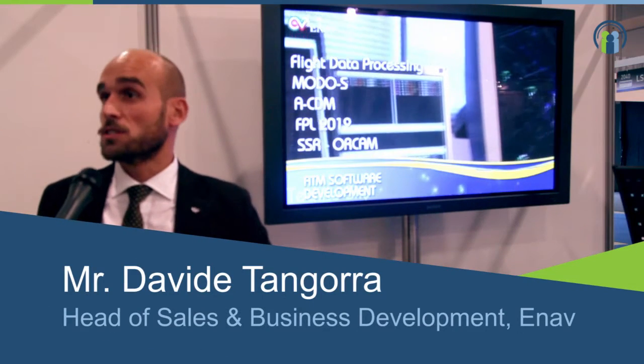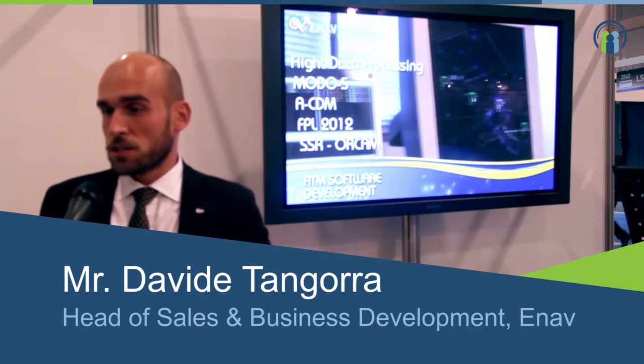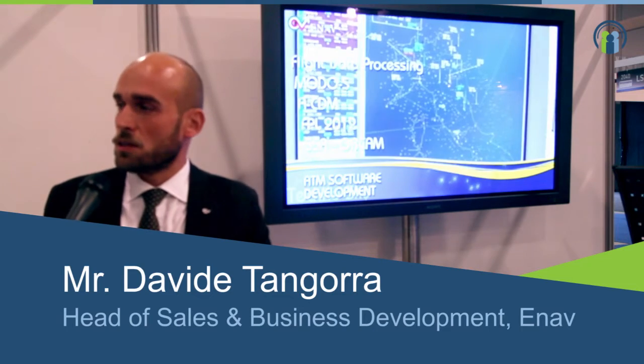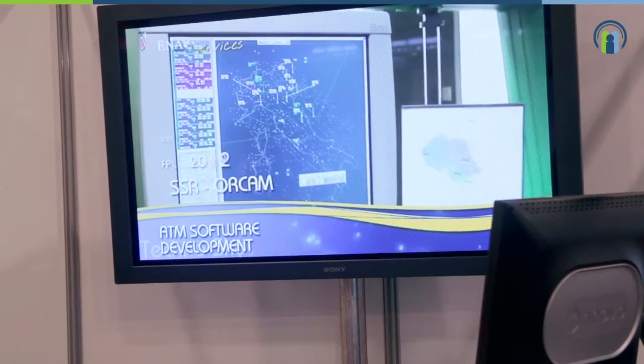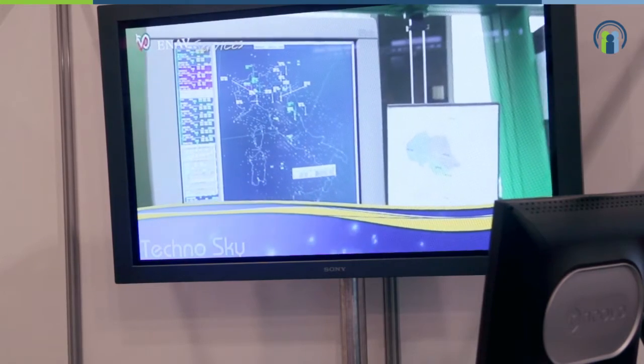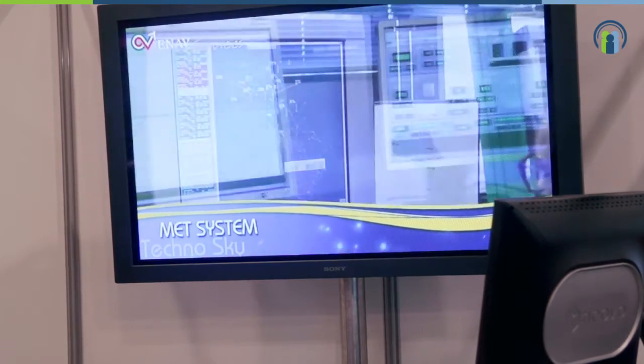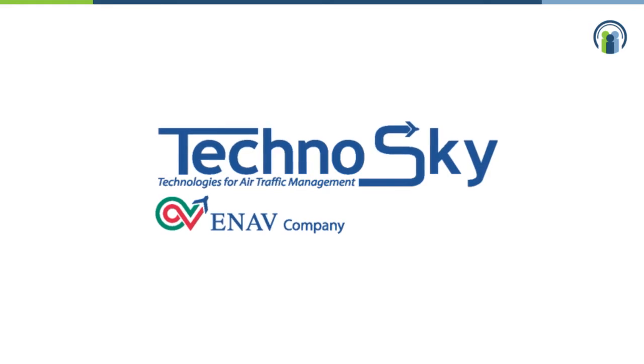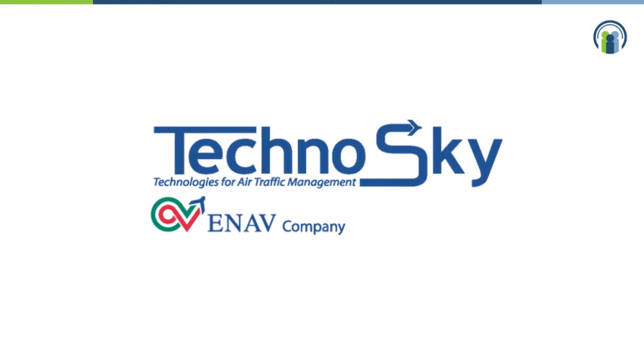ENAV is the Italian air navigation service provider. We are responsible for air traffic control activities over the Italian airspace, and we also deliver meteorological services in terms of forecasts and observations in the 39 airports under our responsibility. Together with our control company Technosky, we decided to completely redesign and develop a complete set of airport meteorological softwares.